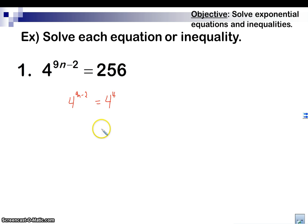Once we have them the same base, we're going to take the exponents and just make those equal to each other. So we're going to have 9n minus 2 equals 4. That's it. Just get rid of the base. Look at the exponents. Now we're going to solve.